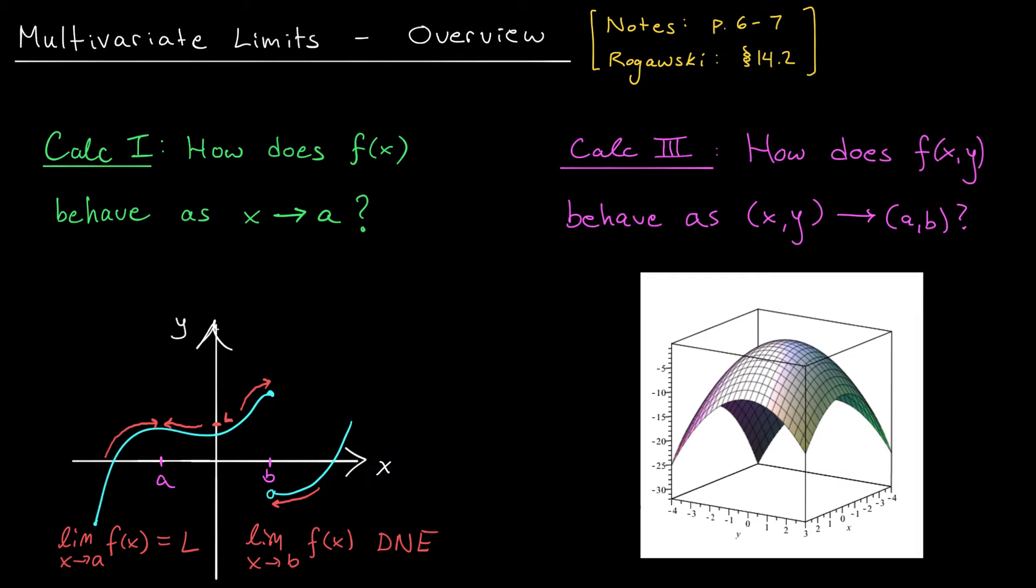For the sake of example, let's consider a function like this. And suppose that our target input is this point right here, (0,0). We want to know, what is our function doing as the inputs are getting close to (0,0)? With a little bit of thought, you'll start to realize that this problem has become significantly more complicated.